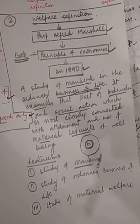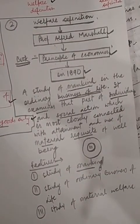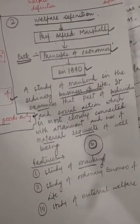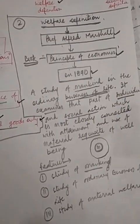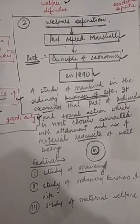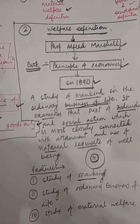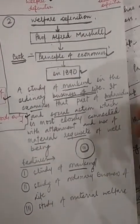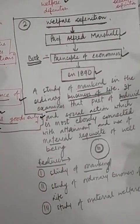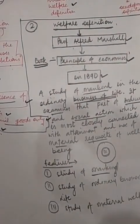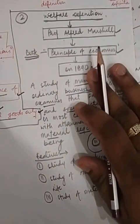Economics studies an ordinary man who earns and spends wealth to get maximum satisfaction. It doesn't study extraordinary men like a sadhu or saint — meaning Marshall said the economic man is one who is concentrated about wealth, who knows the value of wealth, who has economic interest and interest in money. That type of person will be considered under this definition. Those who don't believe in money will not be considered under this definition, according to Marshall.